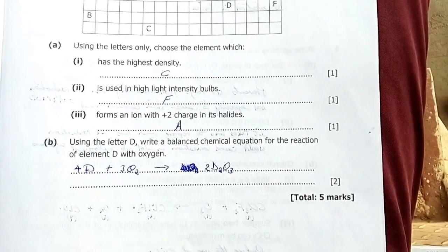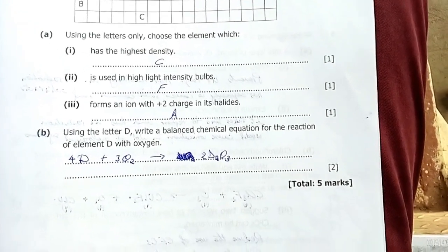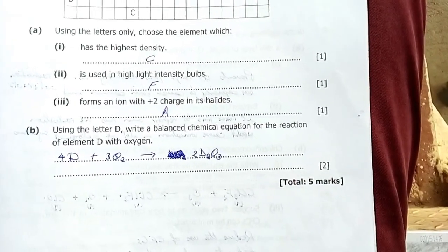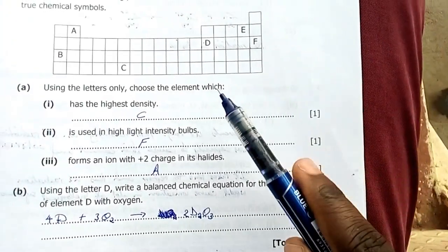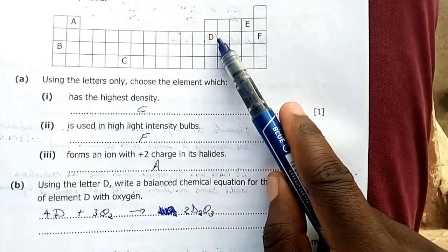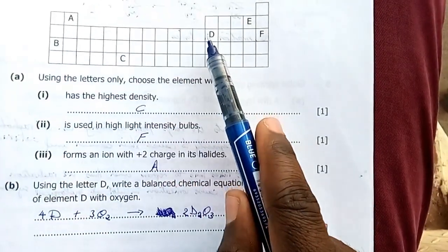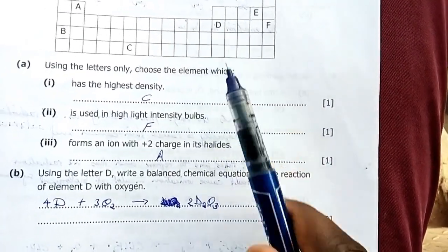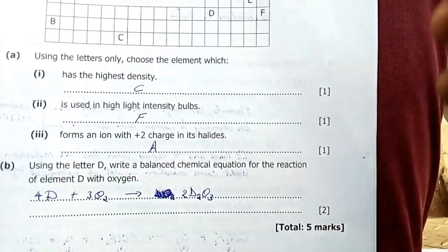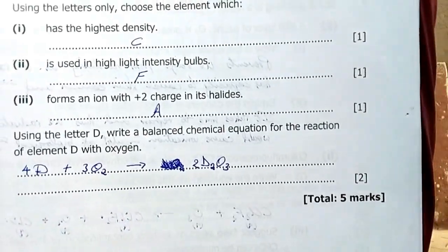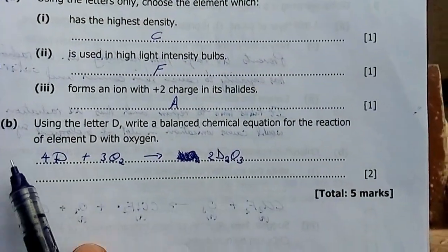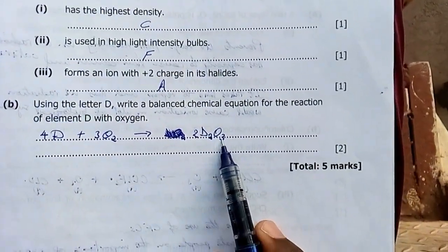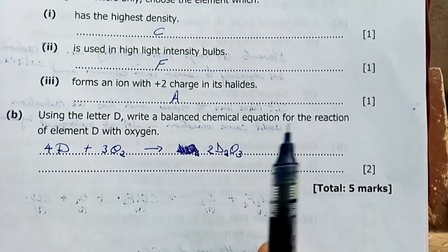Using the letter D, write a balanced chemical equation for the reaction of element D with oxygen. When you look at D here, it's just after the transition groups. This is group 1, group 2, group 3. Therefore the valency of this guy is 3. The compound that would be formed here would be like that of aluminum oxide. Therefore D plus oxygen gives you D2O3. When you balance this, it gives you 4D plus 3O2 gives 2D2O3.